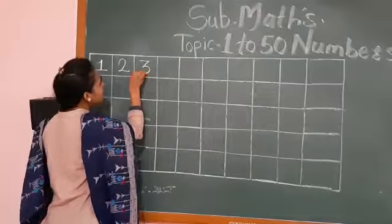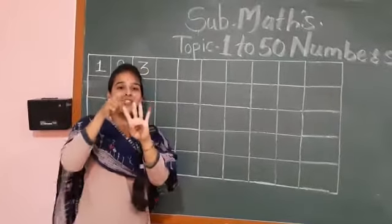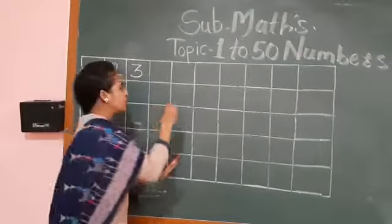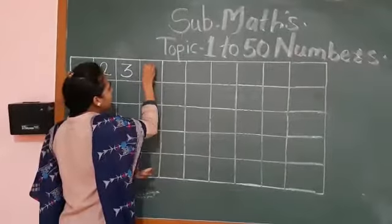How many fingers? Three. Again? One, two, three, four. Which number will we write here? Four.